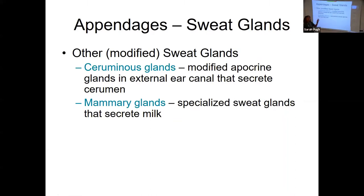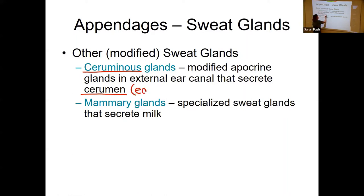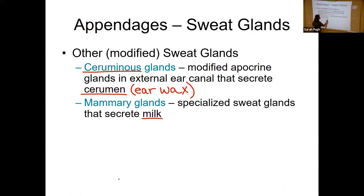Some other sweat glands we have are modified glands. We have ceruminous glands — these are modified sweat glands found in the ear canal, and they are modified to secrete cerumen, which is earwax. We also have mammary glands, which are modified sweat glands modified to secrete milk.